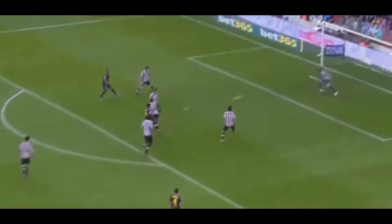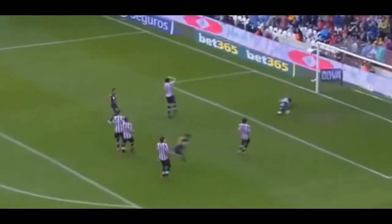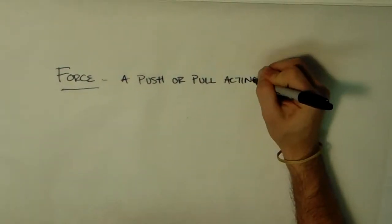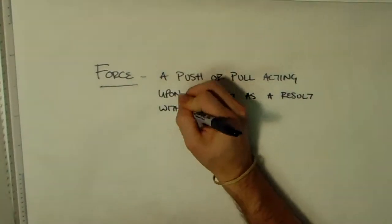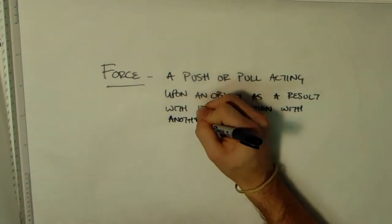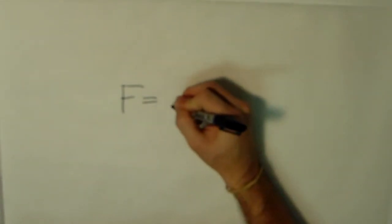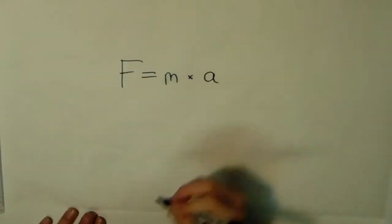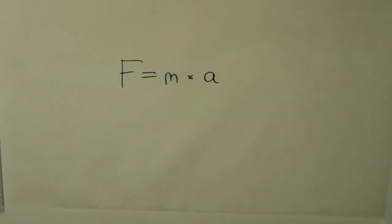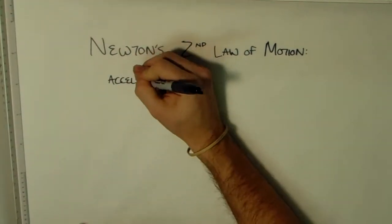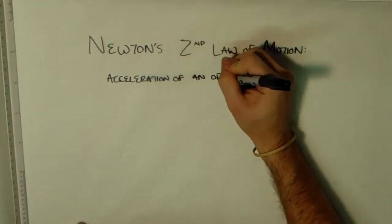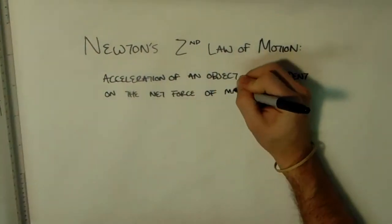But how can we begin to achieve such a magnificent feat? First, what is force? Force is a push or pull acting upon an object as a result of its interaction with another object. The basic formula for force is F equals mass times acceleration, which is Newton's second law of motion. Acceleration of an object is dependent on the net force and mass.